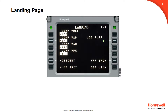If the landing init has been completed, the landing page will be shown with told computed landing speeds if the told APM option has been enabled. If told is not enabled, dashes will be shown for each V speed. From the landing page, the landing init page can be accessed via the prompt at line select key 6 left.